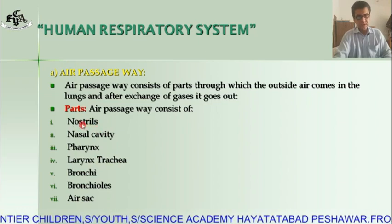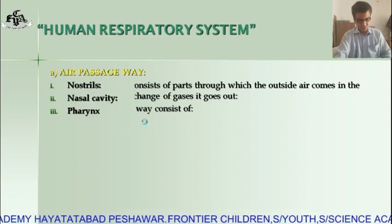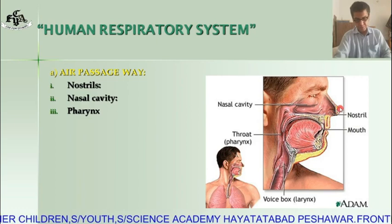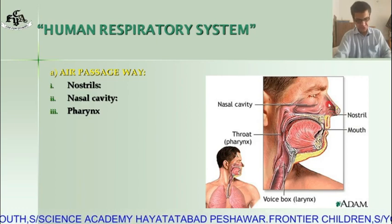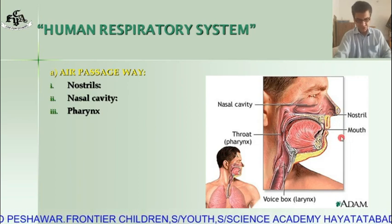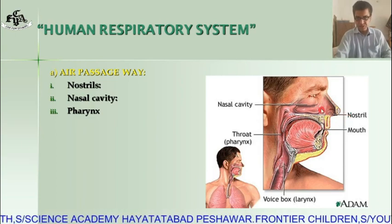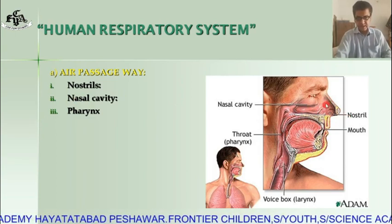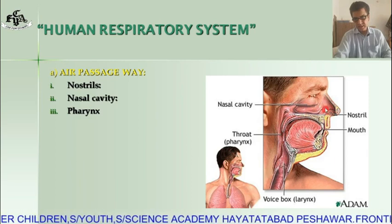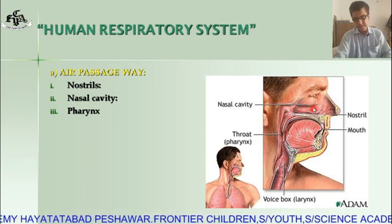The first part is the nostrils. Nostrils are the two openings present on the ventral side of the head. Air enters through the nostrils during inhalation — inhalation means taking in of air. These nostrils then lead to a cavity called the nasal cavity. Inside the nasal cavity, at the beginning there are hairs, and the lining of this nasal cavity has a mucus lining.